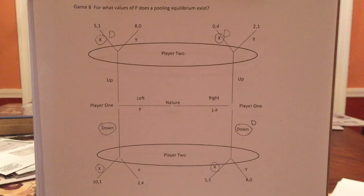So P, if there's a pooling equilibrium, P needs to be such that if down is played, player two is better off, or at least no worse off, playing X than Y.